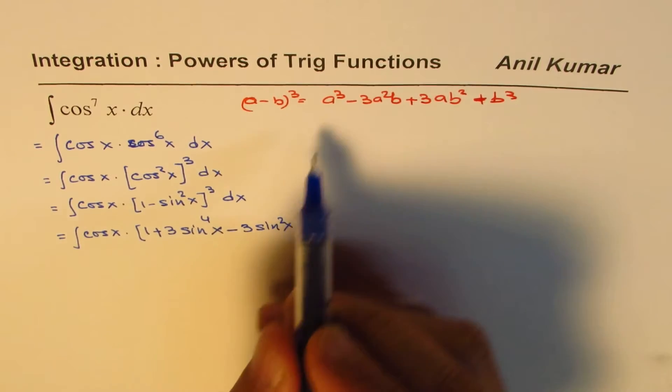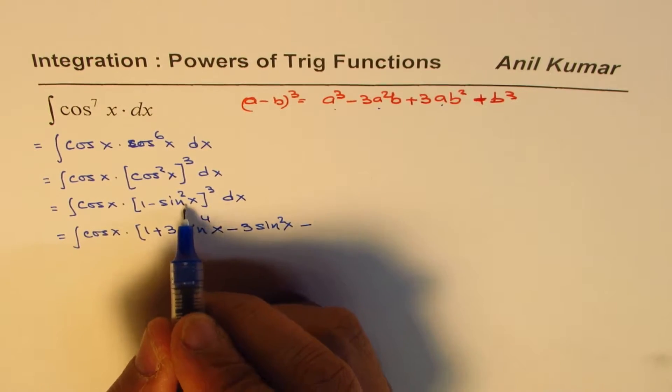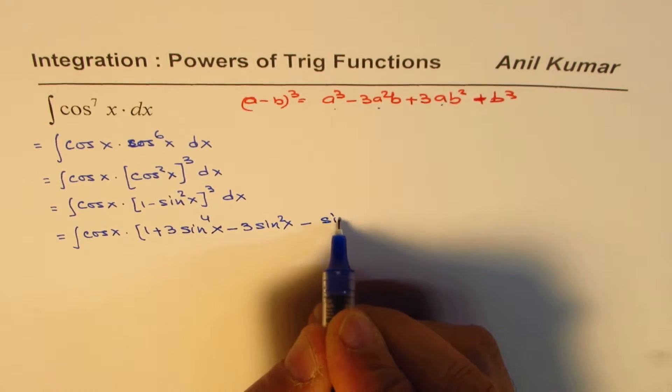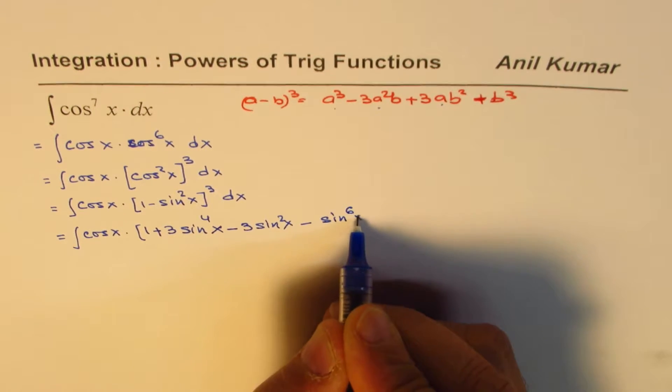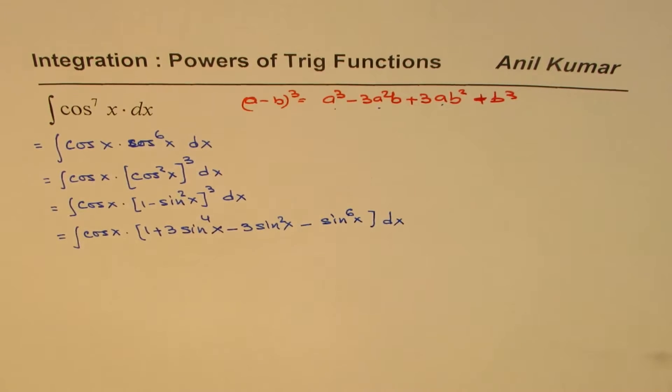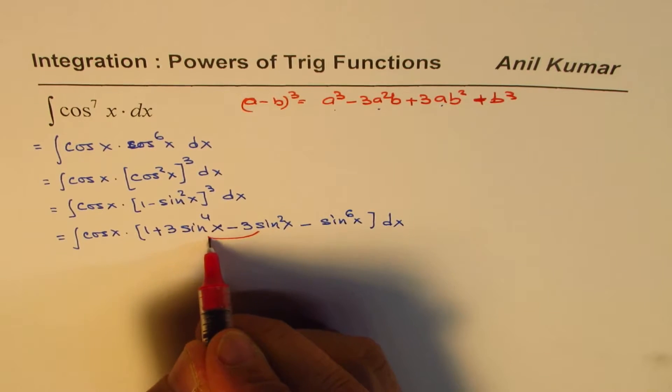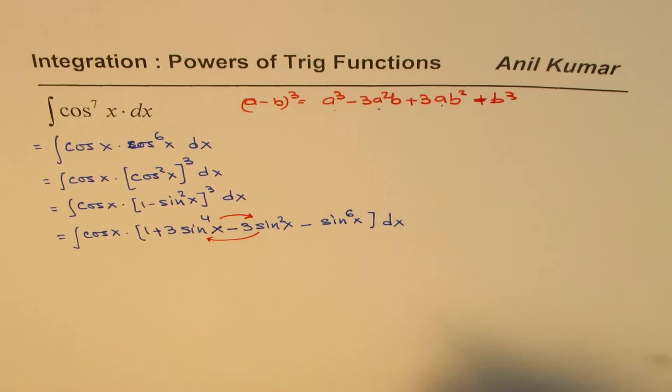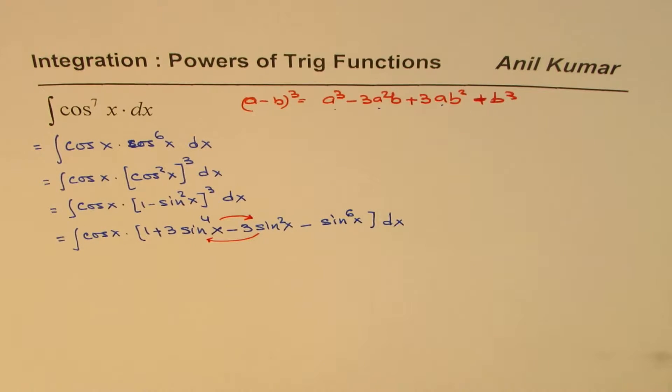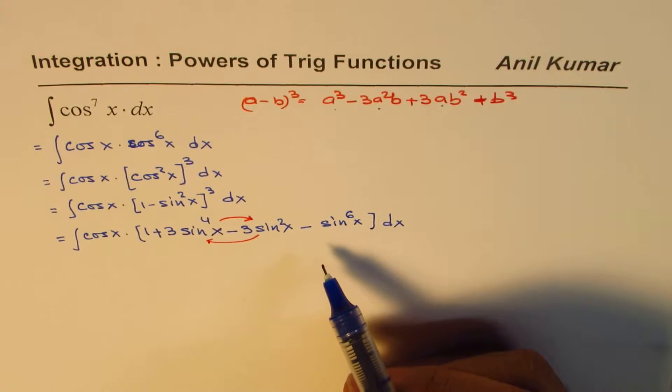And now the last term will be the cube of this, which is sine to the power of 6x. So while writing, I made a change—this should have come here and that should have come there. But however, it doesn't make any difference. But just so that you can correlate the two, I think it's important to understand what we did here.